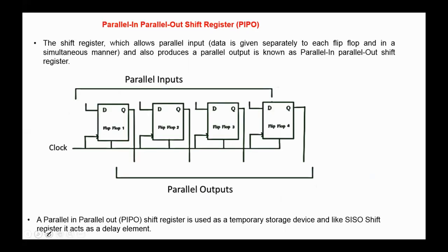The fourth type of shift register is parallel-in parallel-out. The shift register which allows parallel input and also produces a parallel output is known as a parallel-in parallel-out shift register. A parallel-in parallel-out shift register is used as a temporary storage device and, like a serial-in serial-out shift register, it acts as a delay element.